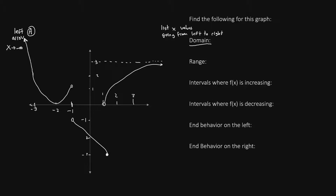So we can begin the domain with negative infinity. Now let's follow that piece from the left going to the right, and see where it ends. It will end in this open circle. The x value here we can read by drawing a dotted line down to the x-axis — it ends at negative 1. We're going to put a closed parenthesis there. Anytime you have an open circle, you use parentheses; anytime you have a closed circle, you use a square bracket.